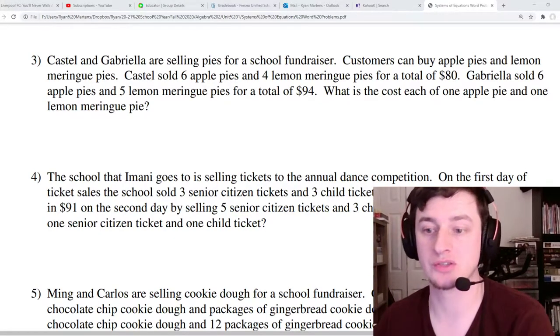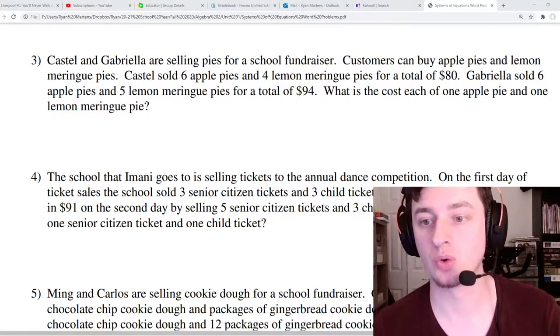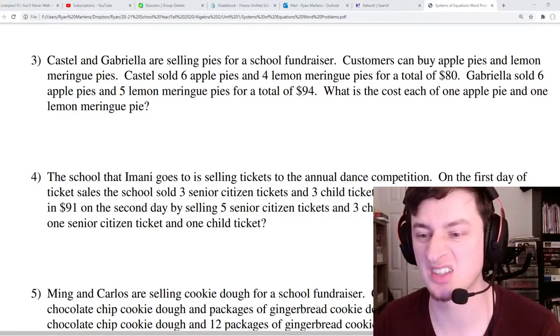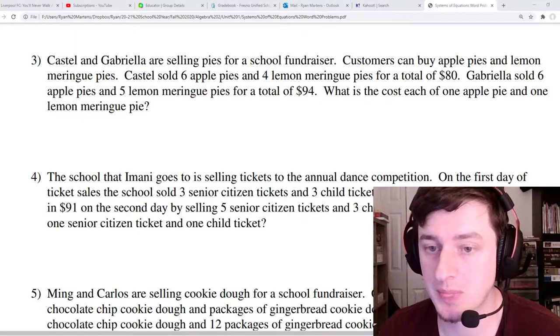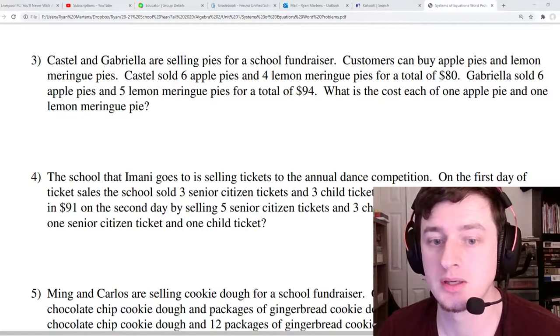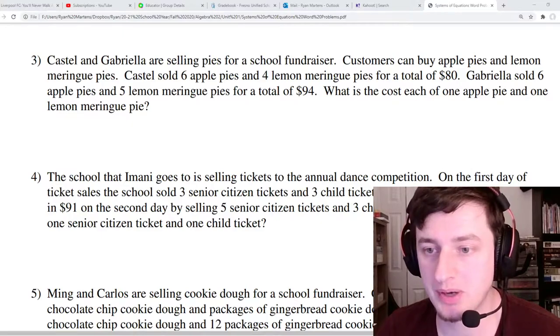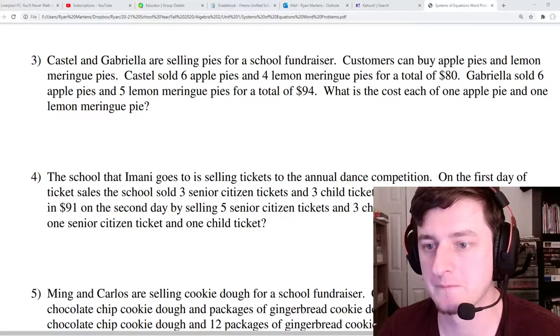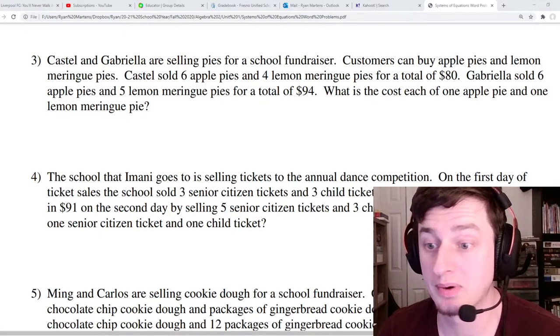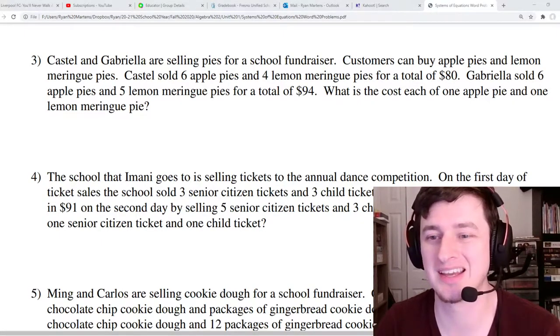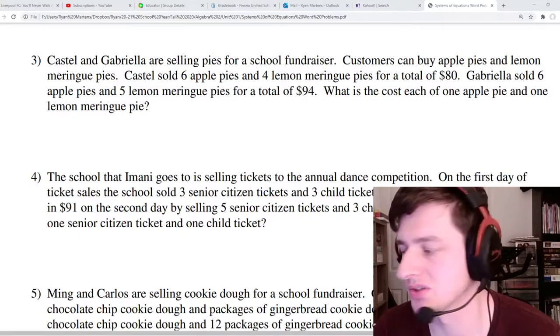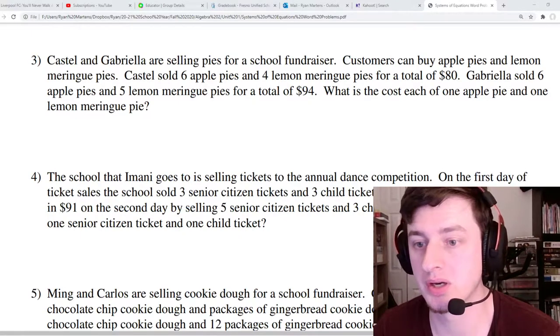We're going to write two systems of equations. One of the equations is going to be Castel's information, and the other equation is going to be Gabriela's information. We're going to use variables for apple pie and for lemon meringue pie. We probably shouldn't use P because that's in both things, but we'll use A for apple and not L for lemon because it's going to look like a one, but M for meringue.